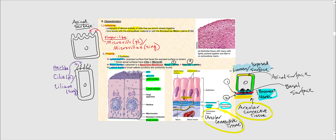The third surface is the lateral surface, where most cellular junctions are found — desmosomes, gap junctions, and adherence junctions, if present. The apical surface is the exposed surface highlighted in yellow, the lateral surface is where cellular junctions occur, and the basal surface is in direct contact with the basement membrane.